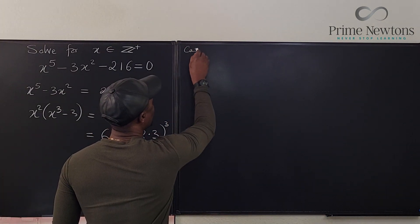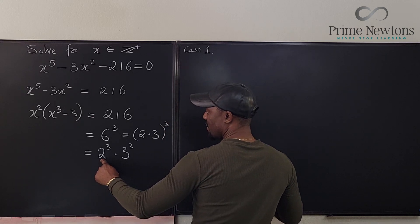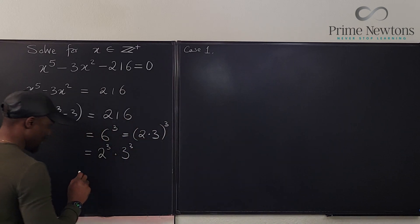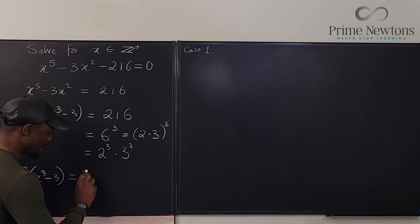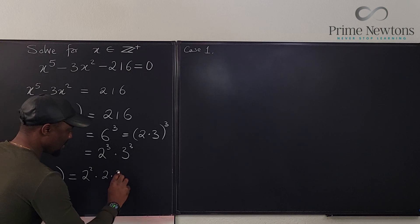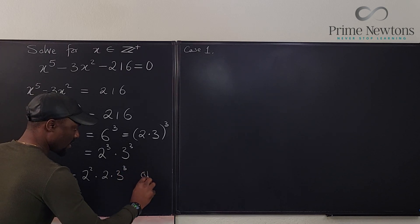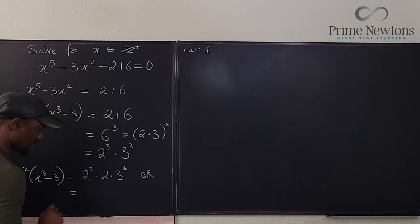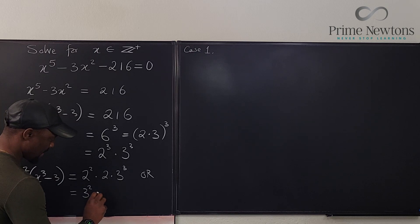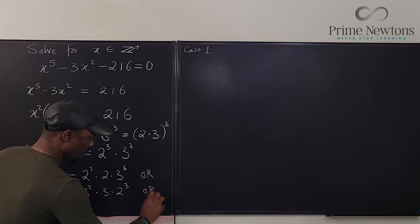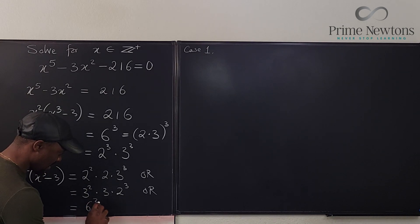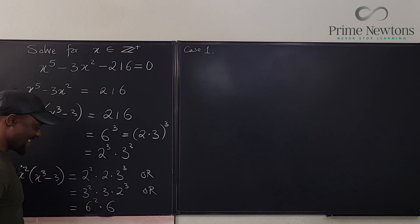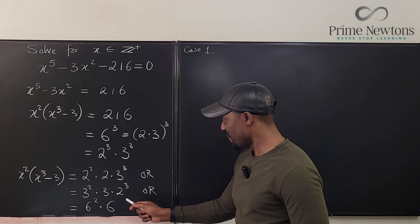Another option is to combine the squares, so I have a number of options. Let's take the smallest square. I can write this as 2 squared times 2 times 3 cubed, or I can say it is equal to 3 squared times 3 times 2 cubed, or it can be the combination of these two squares, which is going to be 6 squared times 6. So these are the possible options. It's either I use this combination or this combination or this combination.